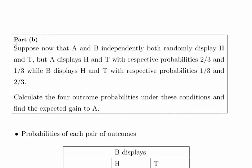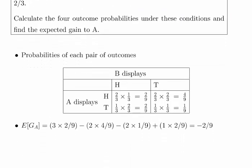Now suppose that both A and B independently both randomly display heads and tails, but they're doing it with different probabilities. A favors heads two-thirds of the time, whereas B favors tails two-thirds of the time. So essentially what we're going to do here is we're going to update our probability table there.